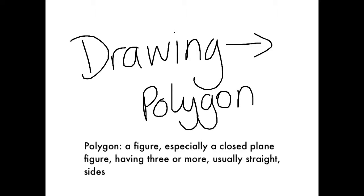Firstly, a polygon is a figure, especially a closed plane figure, having three or more usually straight sides. So for example, a triangle is a polygon. It's a closed-in shape. It's got three straight sides in this case. That means it has three vertices.